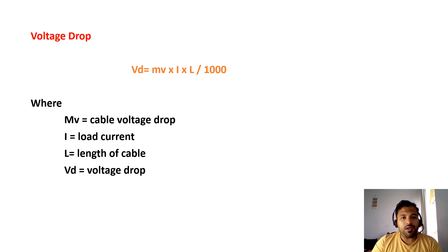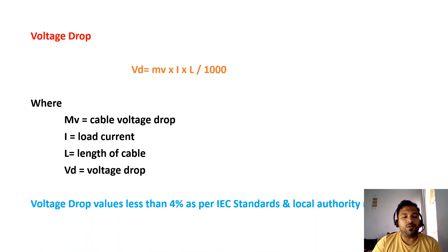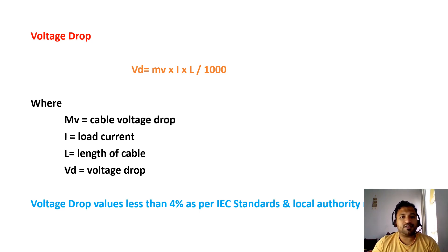I will show you an Excel sheet where we will enter the values and get the result. Before that, we have to know that the voltage drop value should be less than 4% according to IEC standards as well as local authority standards.